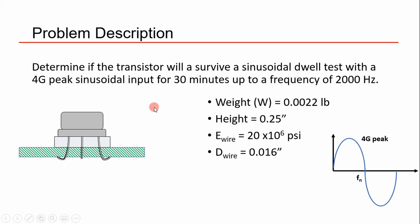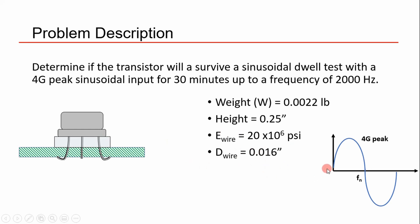Some parameters you need to do this analysis are the weight of the transistor, the height between the circuit board and the spacer — which I'm calling a quarter of an inch — the Young's modulus of the soldered wires, and the wire diameters. We're going to be running this test at 4Gs.